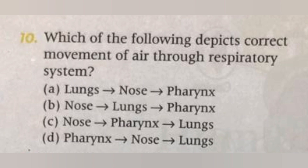Next, which of the following depicts the correct movement of air through the respiratory system? A. Lungs, nose, pharynx. B. Nose, lungs, pharynx. C. Nose, pharynx, lungs. D. Pharynx, nose, lungs. The answer is C: nose, pharynx, lungs.